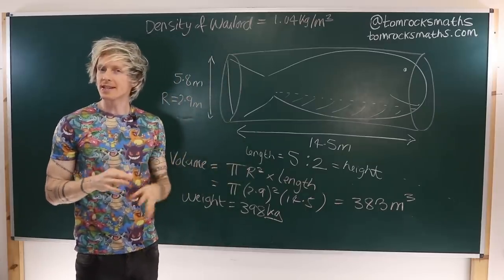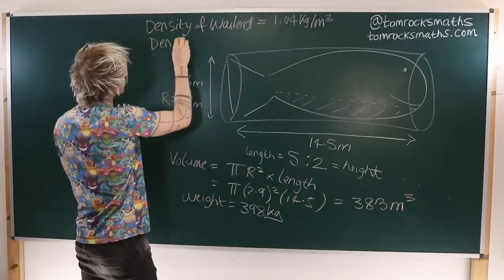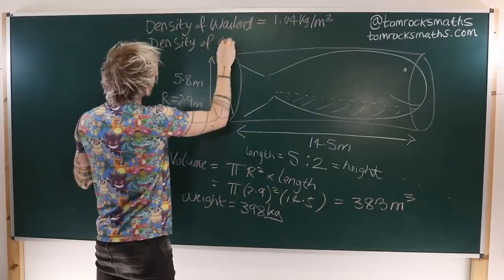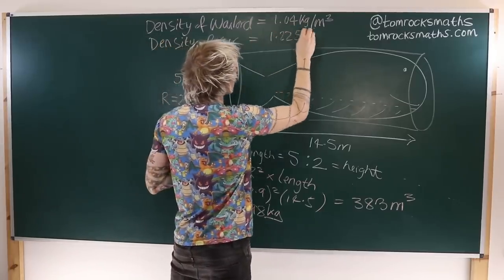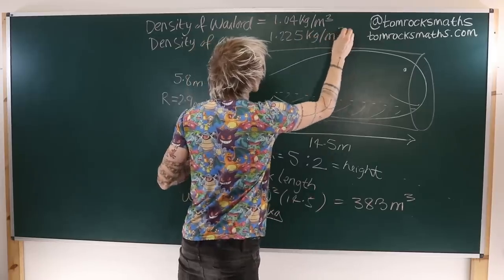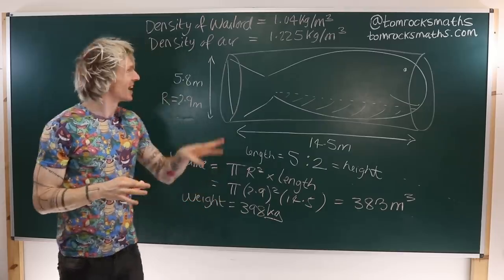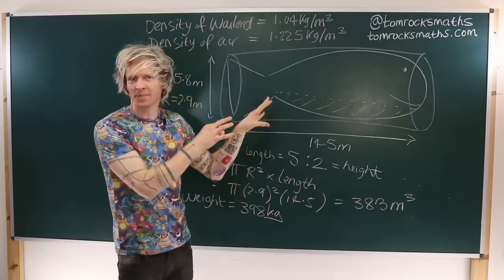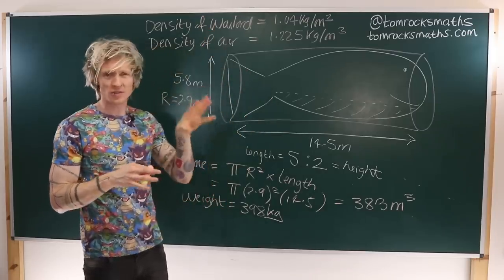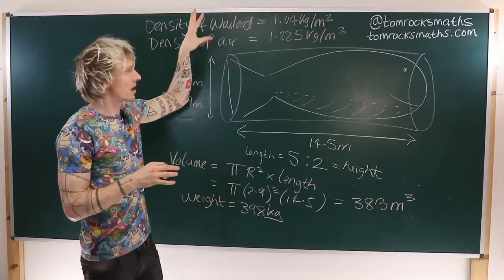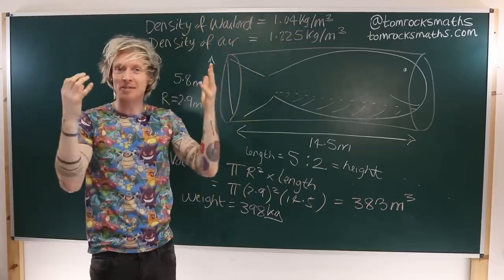Now the density of air, this stuff all around us, is actually equal to a larger number. So the density of air is given by 1.225 kilograms per meter cubed. So what this ultimately means, and I'm sure some of you have already figured this out, is that not only would our giant whale Pokemon definitely float, and therefore be pretty useless as a whale, it would not only just float in water, it is lighter than air, and so would actually float up into the atmosphere like a giant blue blimp.